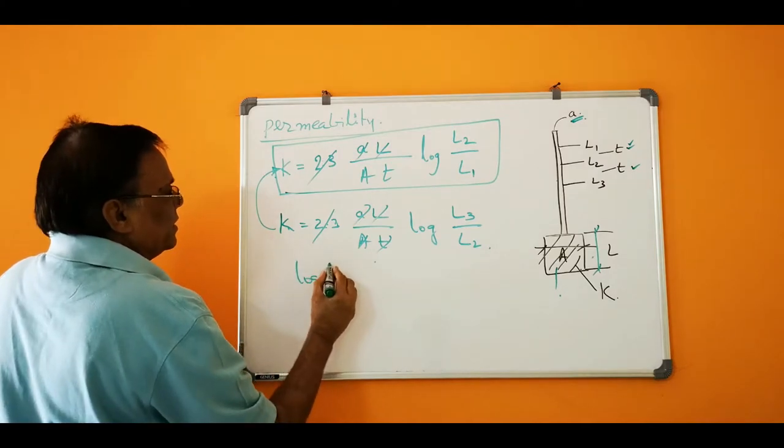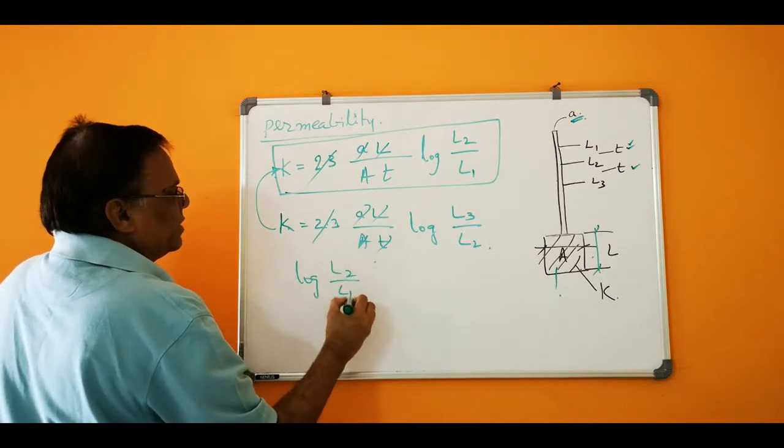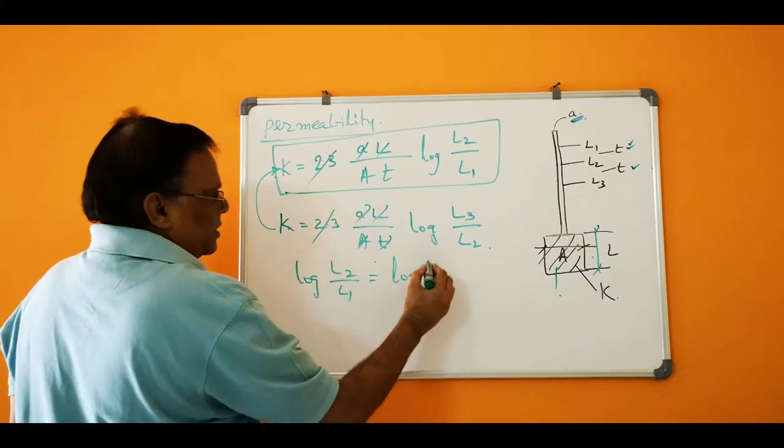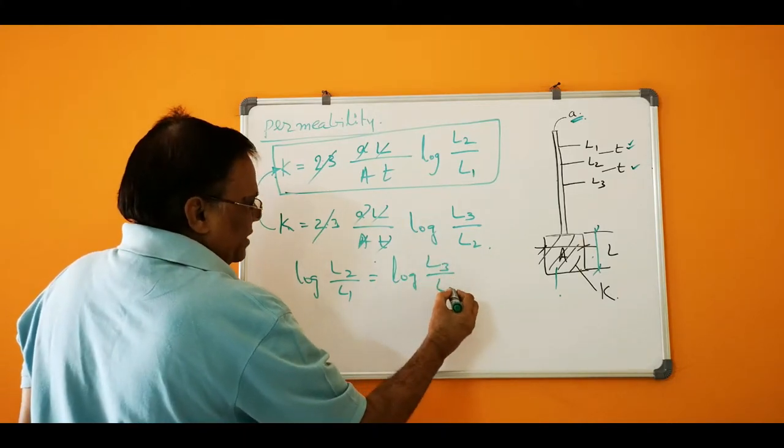So log L2 by L1 is equal to log L3 by L2.